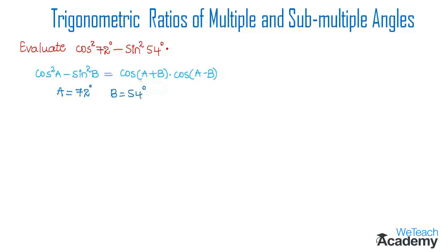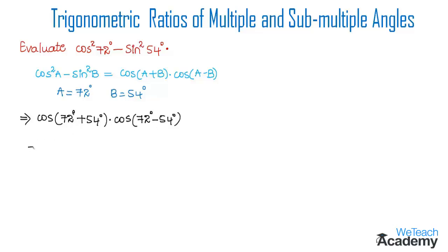Now let us expand the given example using the formula cos(a+b). We get cos(72° + 54°) · cos(72° - 54°). Adding gives cos 126° and subtracting gives cos 18°, so the expression becomes cos 126° · cos 18°.